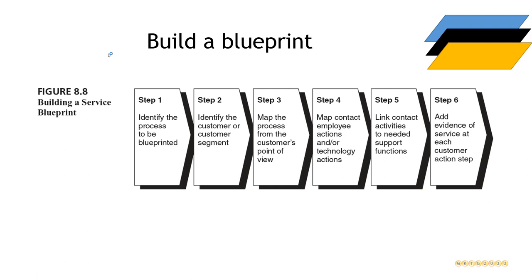Step three: map the front end of the experience from the customer's perspective. You may need to use a mystery shopper approach or go experience your own service. What's of interest here is thinking how does the customer use my service and what needs to be present. Step four: look at the interplay between the contact employees — the people who engage with customers — how do they interact with the customers and what's needed to support them. Finally, look at what takes place at each of the interaction steps, what are the critical touch points, what's visible, and what's the evidence of it.